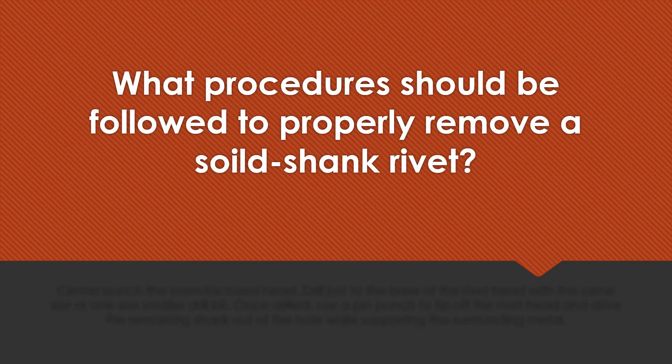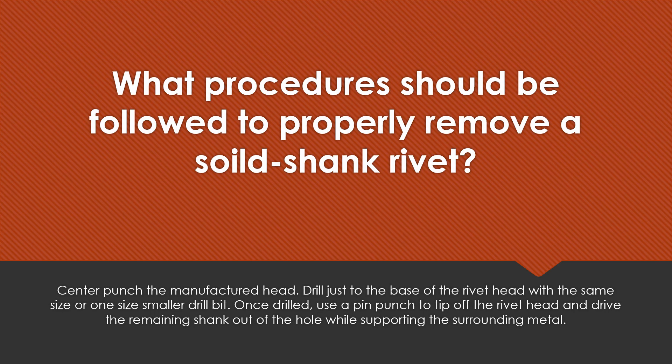What procedures should be followed to properly remove a solid shank rivet? Center punch the manufactured head. Drill just to the base of the rivet head with the same size or one size smaller drill bit. Once drilled, use a pin punch to tip off the rivet head and drive the remaining shank out of the hole, all the while supporting your surrounding metal.